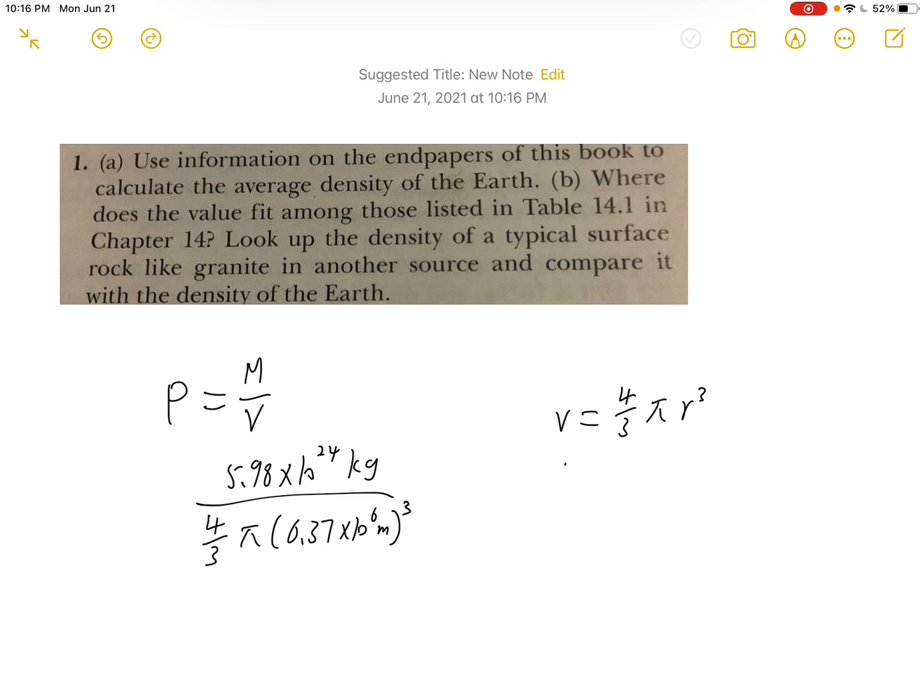And after the calculation, we will get approximately 5.52 times 10 to the 3rd power kilogram per cubic meter. And that's the answer for part A.